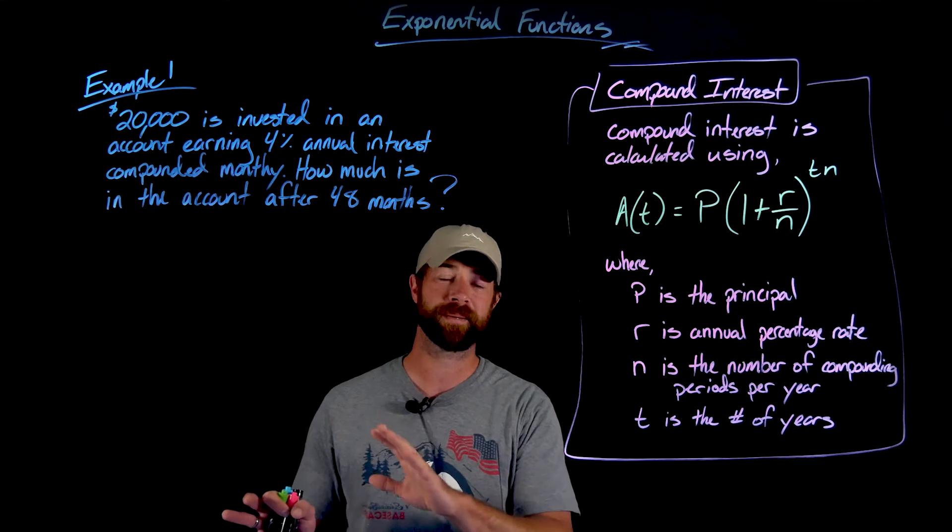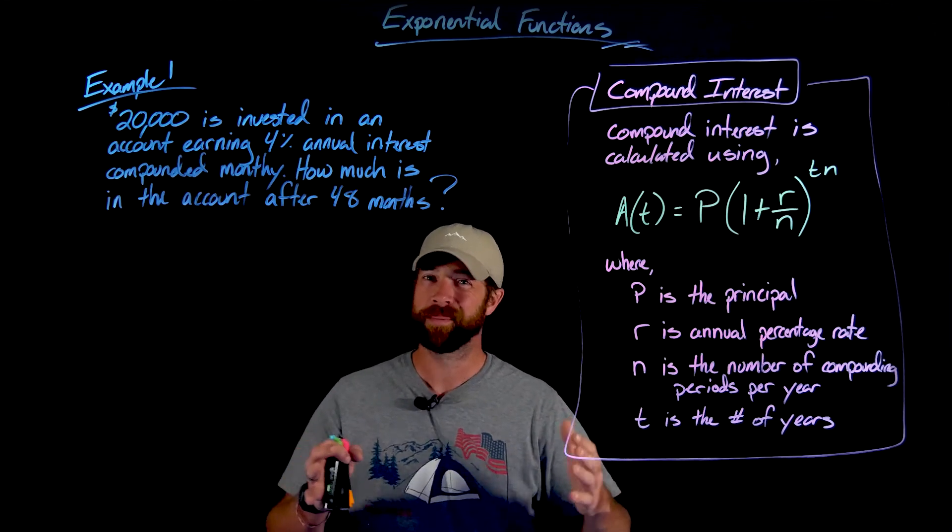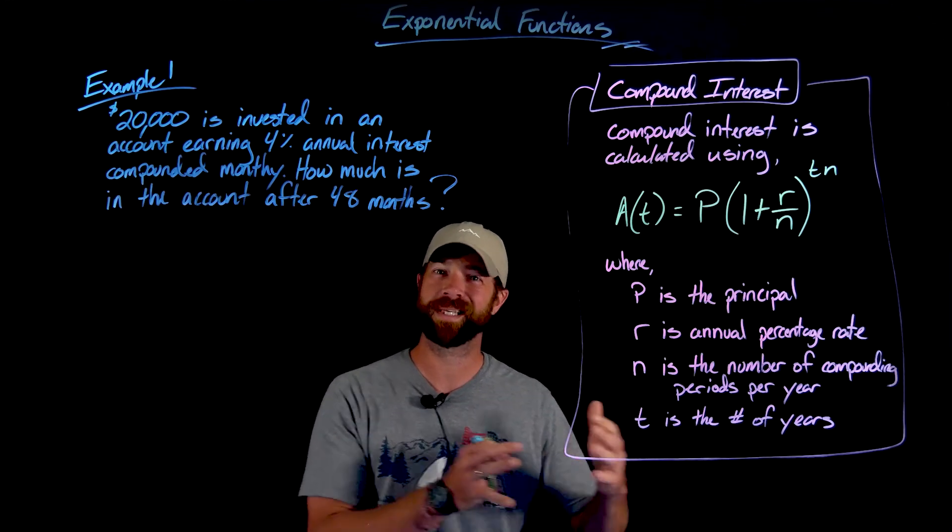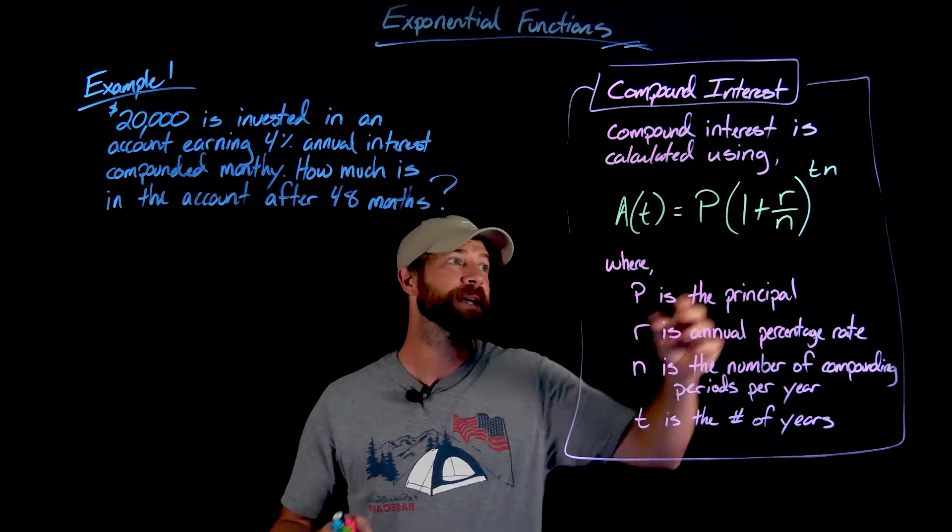In our case, it's going to be 12 for this example. You're dividing that so you have 4% all year, but you don't get 4% every month. It's a yearly rate, not a monthly rate. So we divide that by 12 to get that.